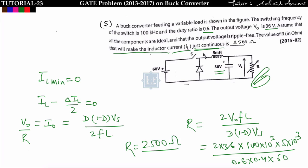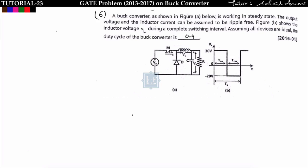Substituting values: R = (2 × 36 × 100k × 5mH) / (0.6 × 0.4 × 60) = 2500 ohm. Note: in the numerical type question, write 2500 ohm, not 2.5 kilohm, otherwise you will get negative marks.